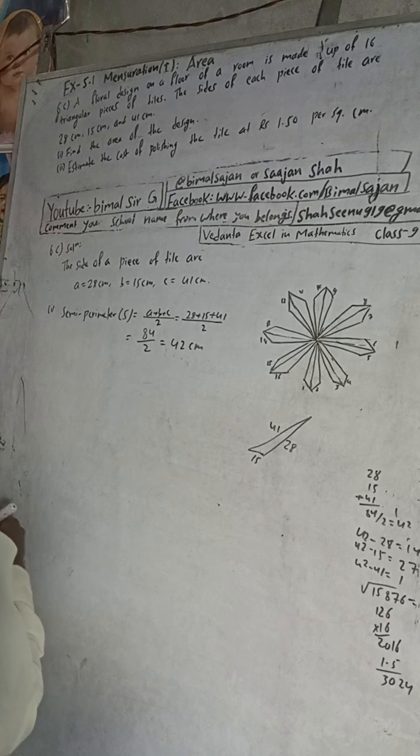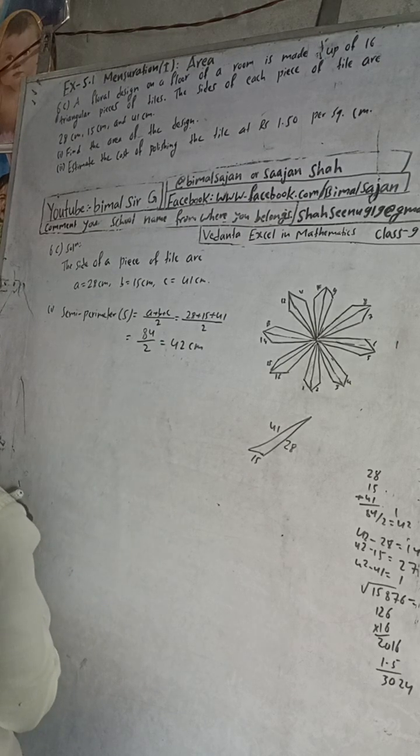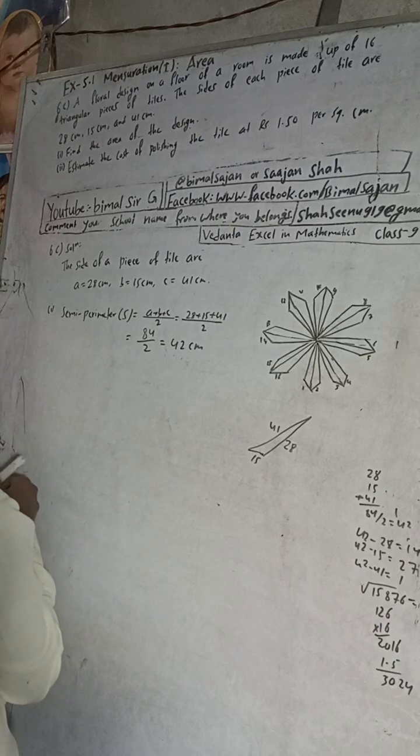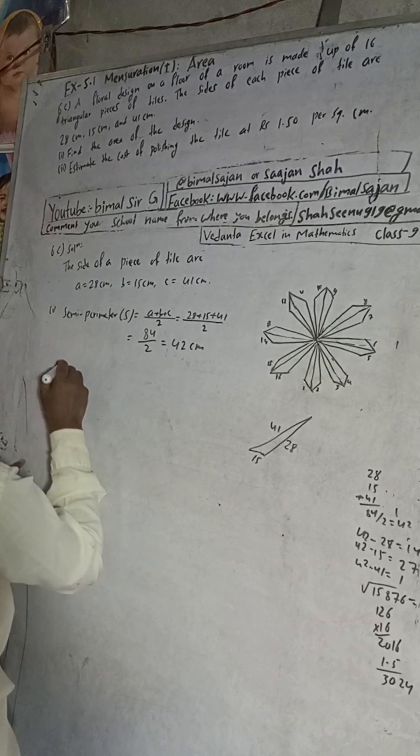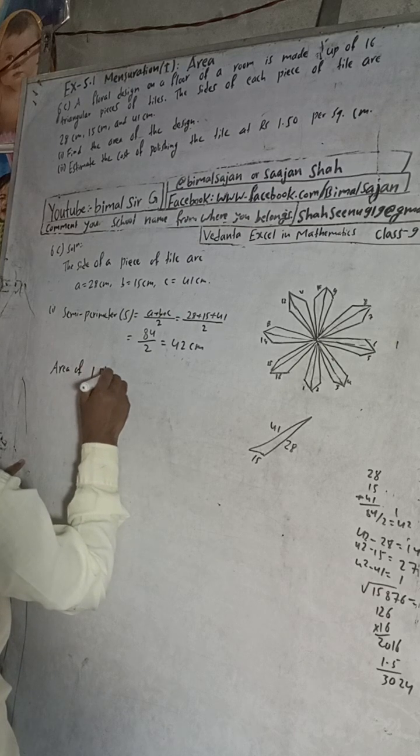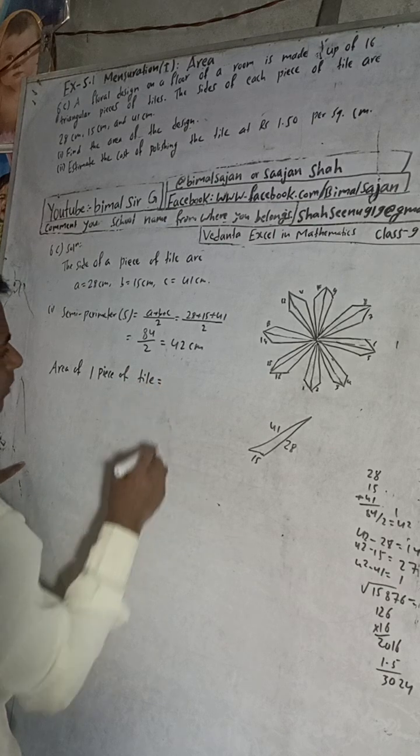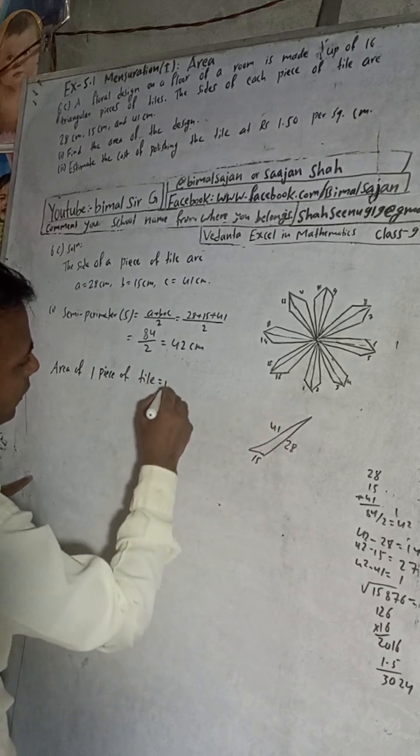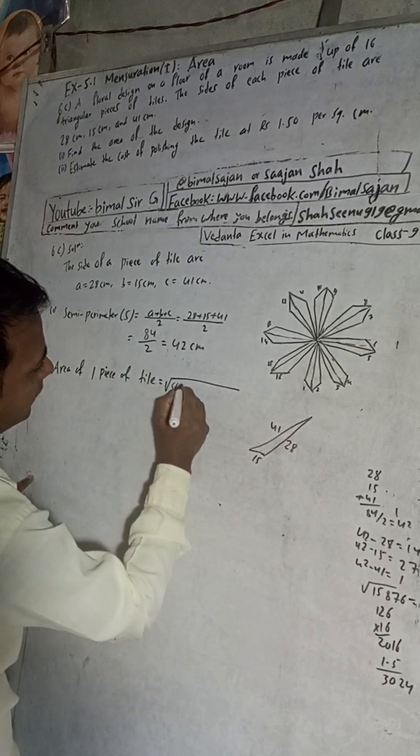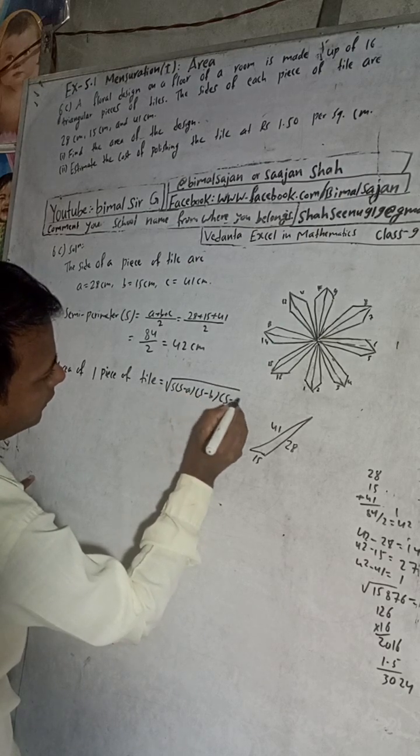Now we got semi-perimeter. Now area of a piece of tile is equal to, the formula for this is: root under S into S minus A into S minus B into S minus C.